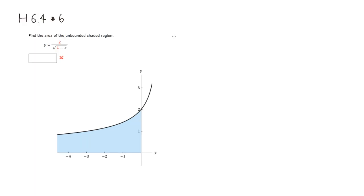The area A can be found by an improper integral. You can see that this region keeps going in the negative direction, so we're going to have to come from negative infinity. It looks like it's going to end at x equals 0. The function is 2 over — with 1 minus x in the denominator with a negative 1/2 power, since the square root is equivalent to the 1/2 power. Then we have dx.